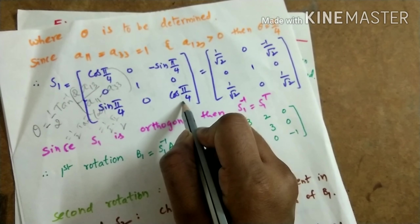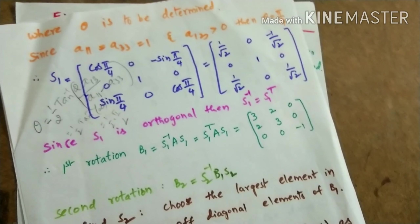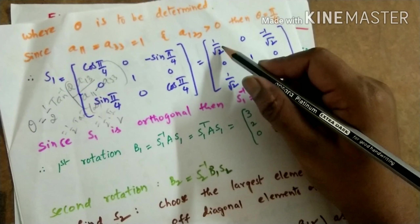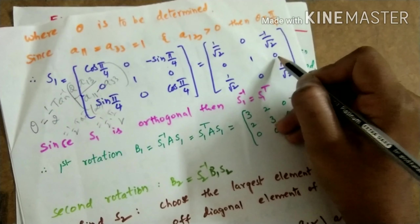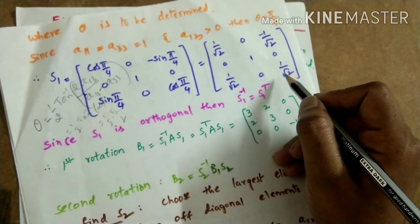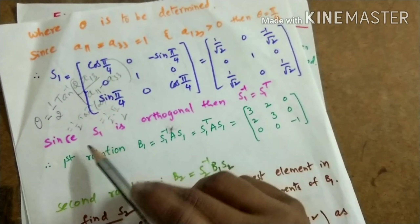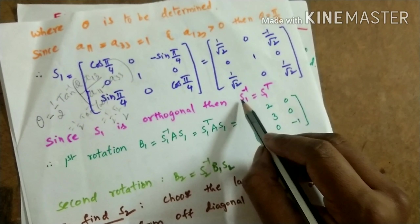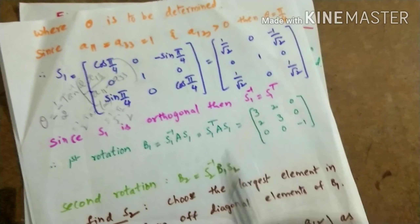Substituting θ = π/4 into S1: S1 = [cos(π/4), 0, −sin(π/4); 0, 1, 0; sin(π/4), 0, cos(π/4)]. Since sin(π/4) = cos(π/4) = 1/√2, we get S1 = [1/√2, 0, −1/√2; 0, 1, 0; 1/√2, 0, 1/√2]. This is our matrix S1.